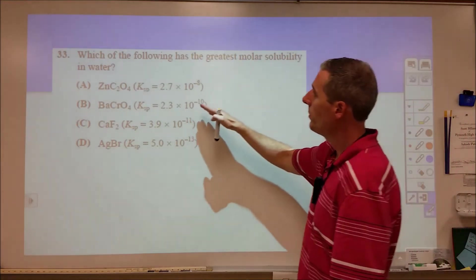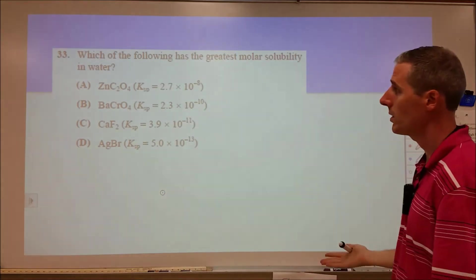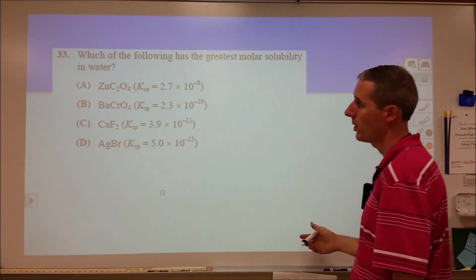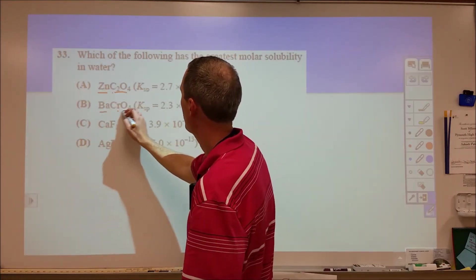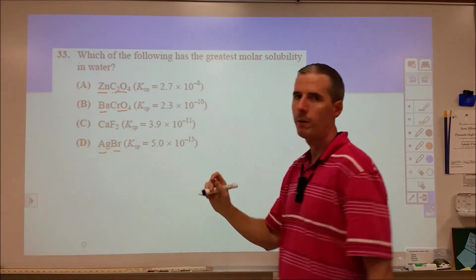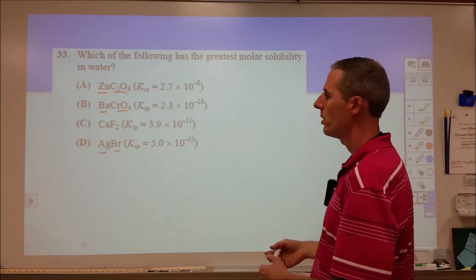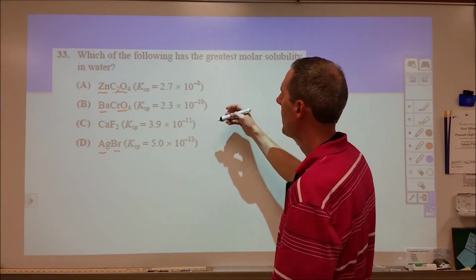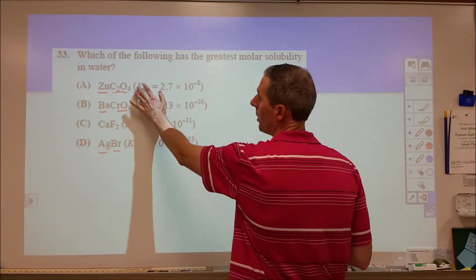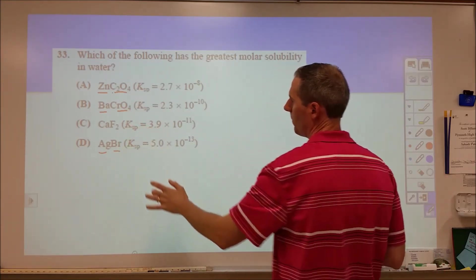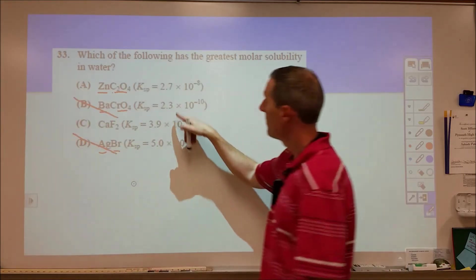On this one, greatest solubility. Usually you can compare by looking at which one has the biggest Ksp value. However, there's one little catch. For A, we have zinc oxalate, a 1:1 ratio; barium chromate, 1:1 ratio; and silver bromide, all in a 1:1 formula unit. But CaF2 is in a 1:2. So when we work out our ice charts, that's going to cause some differences. We actually need to compare the most soluble of A, B, and D with C. The most soluble of A, B, and D is A, because it has the biggest Ksp value.